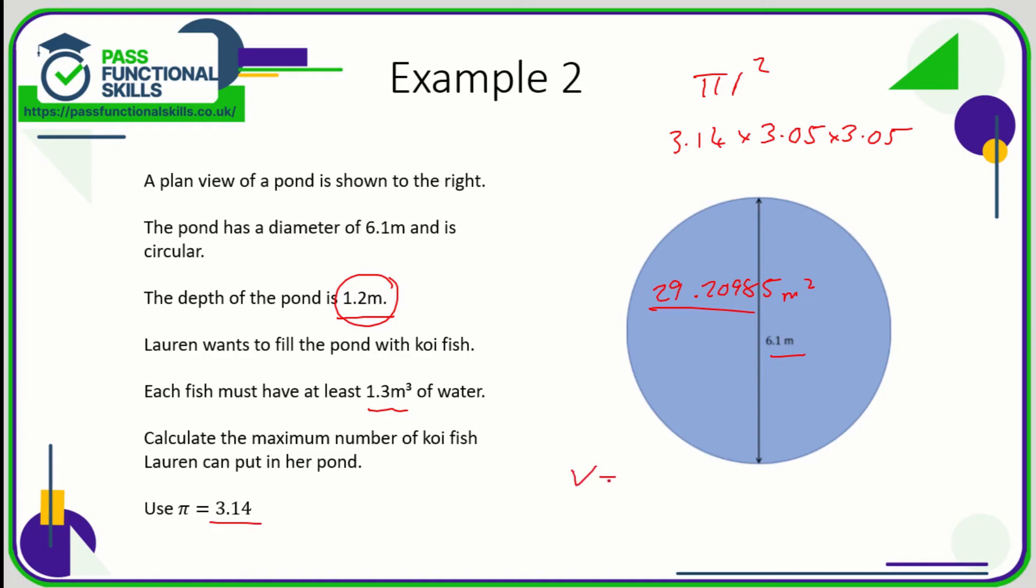Now each fish needs 1.3 cubic meters, so how many 1.3 cubic meters—sorry, cubic meters, not meters squared—how many cubic meters are there in this number of cubic meters?